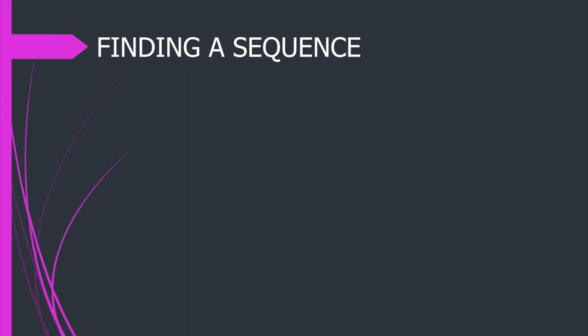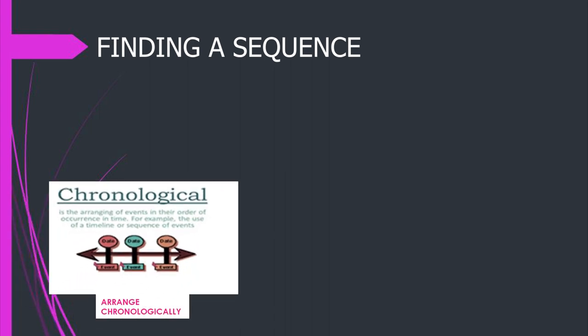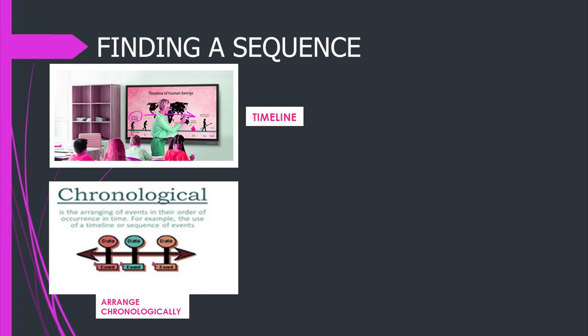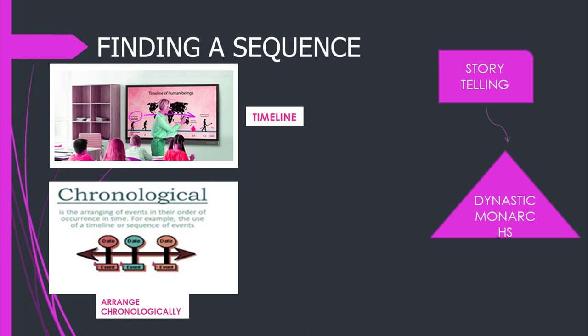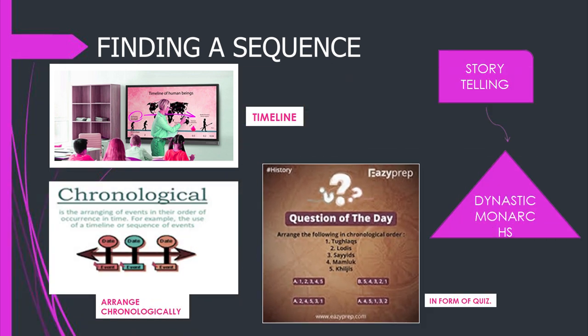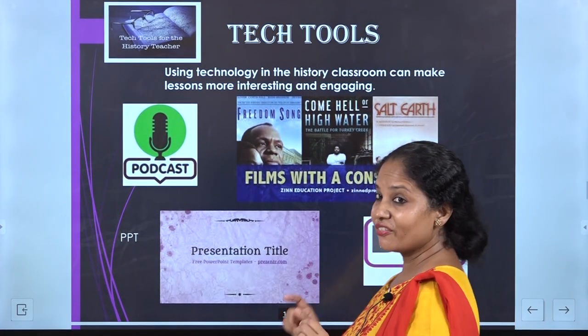Too much data can sometimes be a little confusing for students. We can make it easier when we help them arrange it in chronology or sequence. This can best be done by framing activities like a timeline, telling a story and asking them to put the monarchs in order, or giving a jumbled list with numbering so the child recalls and numbers the monarchs — thus remembering them in sequence.